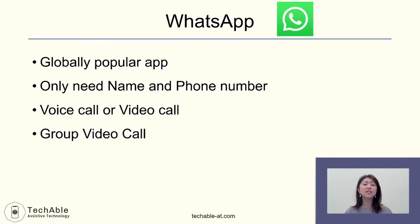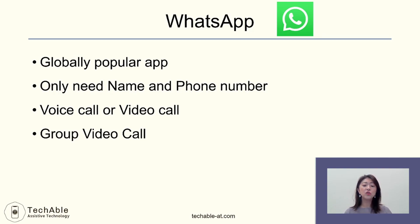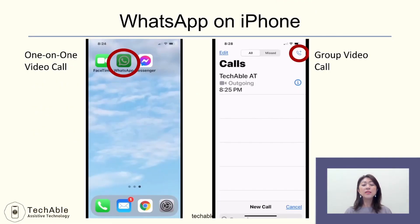The next app is WhatsApp. This app is globally very popular — as of early 2020, it has over 2 billion users worldwide. To use this app, you just need to put your name and phone number after you download it. You can make a voice call, video call, or group video call. The WhatsApp interface on an iPhone and an Android phone are a bit different, so let's look at the iPhone first.